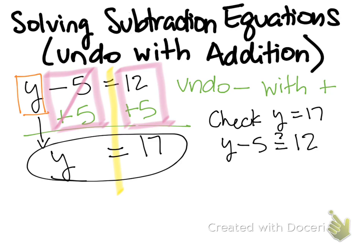So anytime I see y, I'm going to replace it with 17. So 17 minus 5, does that equal 12?